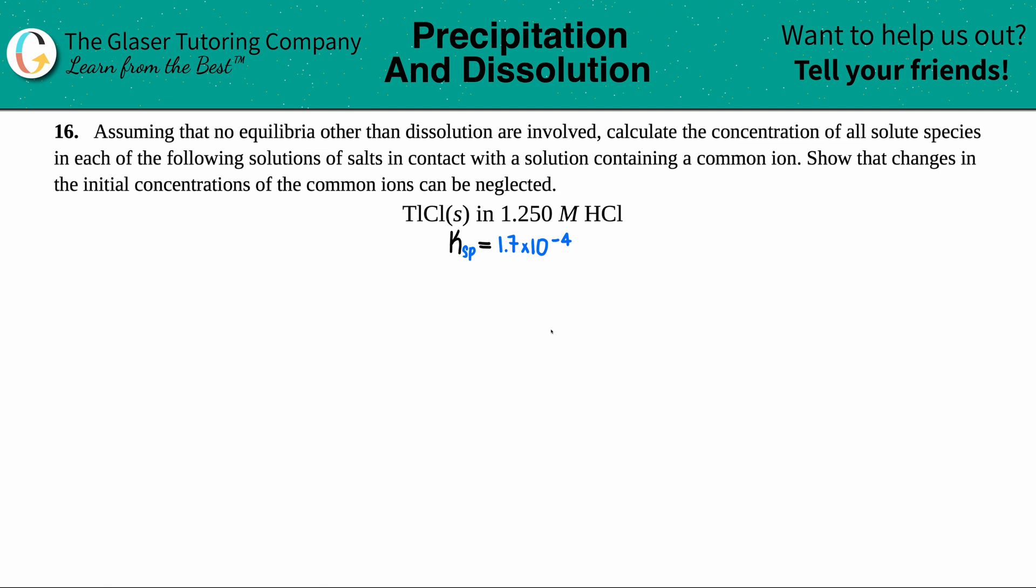Number 16. Assuming that no equilibria other than dissolution are involved, calculate the concentration of all solute species in each of the following solutions of salts in contact with the solution containing a common ion. Show that the changes in the initial concentrations of the common ion can be neglected. And then we have our example here. We have TlCl solid, and this is in 1.250 molarity of HCl.